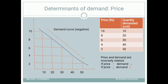What is the relationship between price and demand? They are inversely related — price and demand are inversely related. When we say inversely related, it means a negative relationship: whenever the price increases the demand decreases, and whenever the price decreases the demand increases. That is called an inverse relationship.